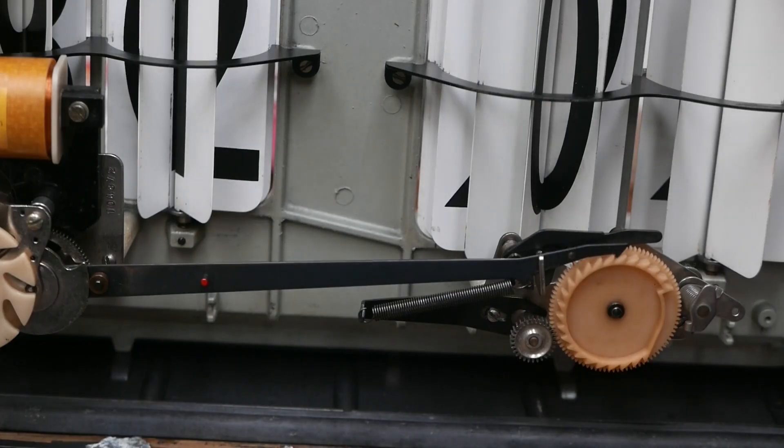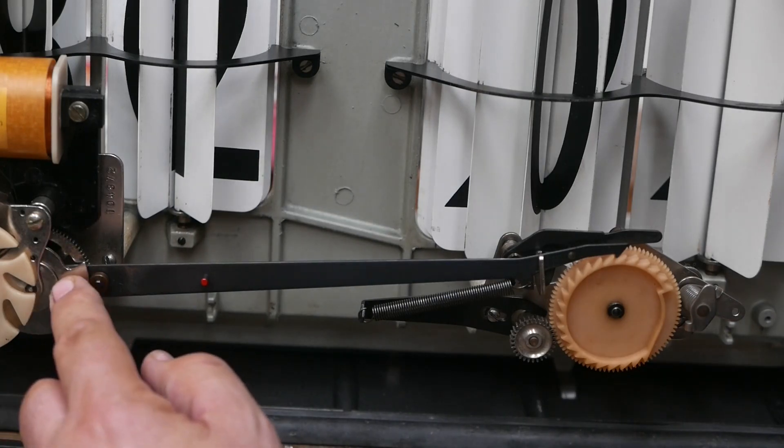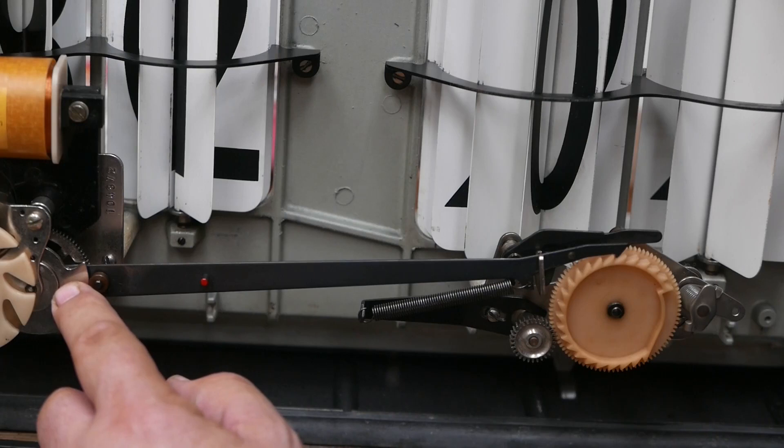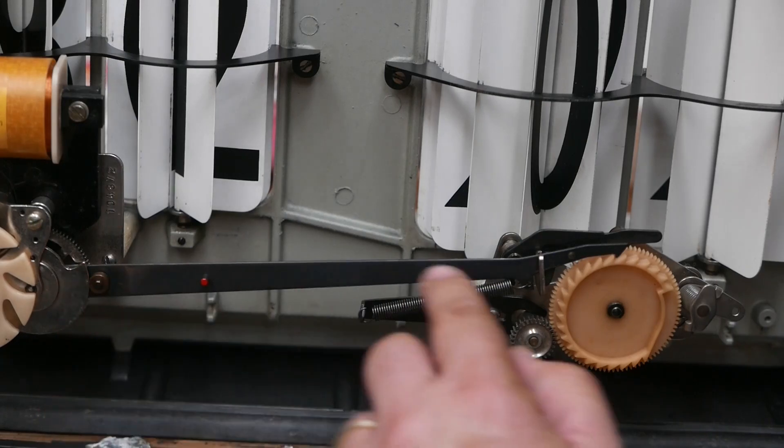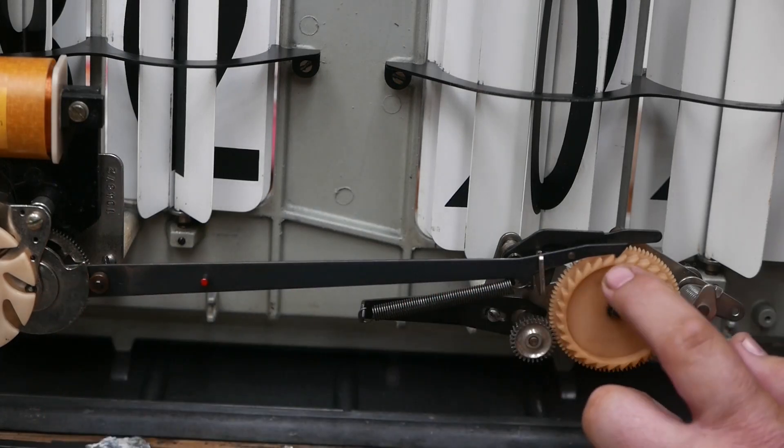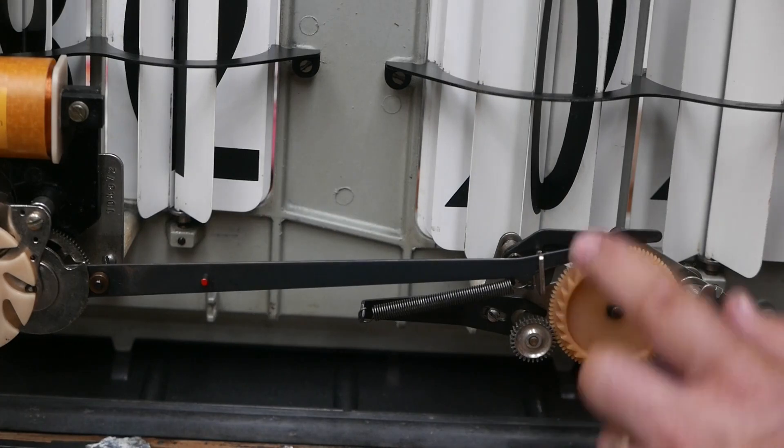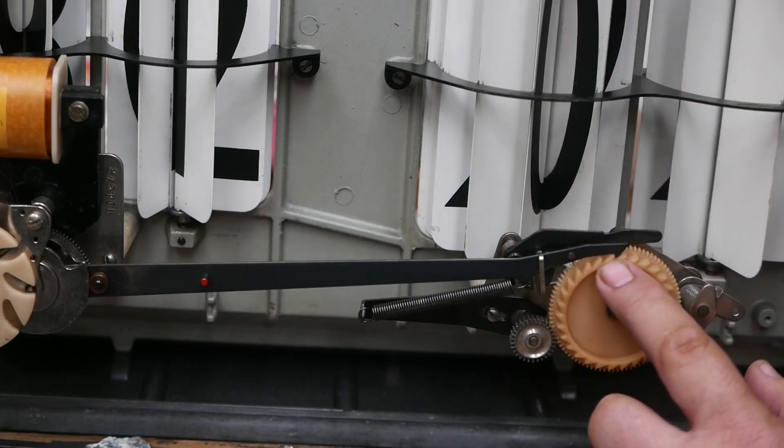So the next part of the mechanism operates each hour. So when the snail cam here is activated, this arm pulls back and advances the cards on this side by one hour.